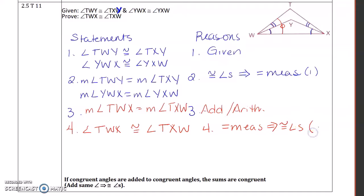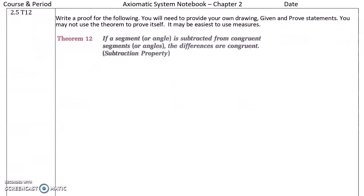So now we've just proven the theorem: if congruent angles are added to congruent angles, the sums are congruent. That should be: adding congruent angles to congruent angles implies congruent sums. The same logic applies to subtraction.